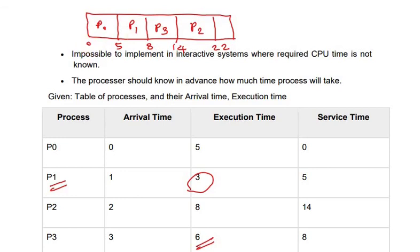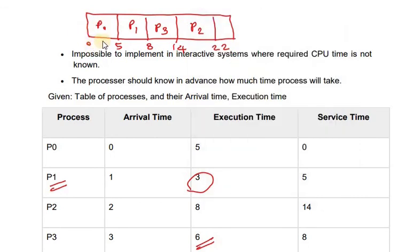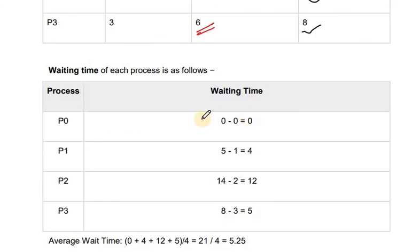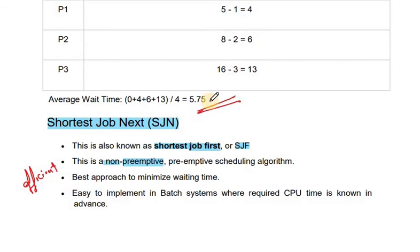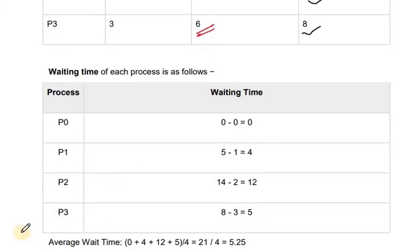Service time for P0 is 0, for P1 is 5, for P3 is 8, and for P2 is 14. Waiting times are: P0 = 0, P1 = 4, P3 = 5, P2 = 12. The average waiting time is 5.25 milliseconds. Comparing with first come first serve, which had an average waiting time of 5.75, shortest job next is more efficient.